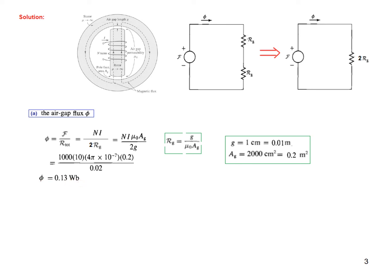So this is the first part. In the second part we have to find the flux density for the air gap Bg. We'll use this formula: the flux density is given by the flux divided by the area. The flux we have calculated, 0.13 Weber, area is 0.2, so the flux density is 0.65 tesla.